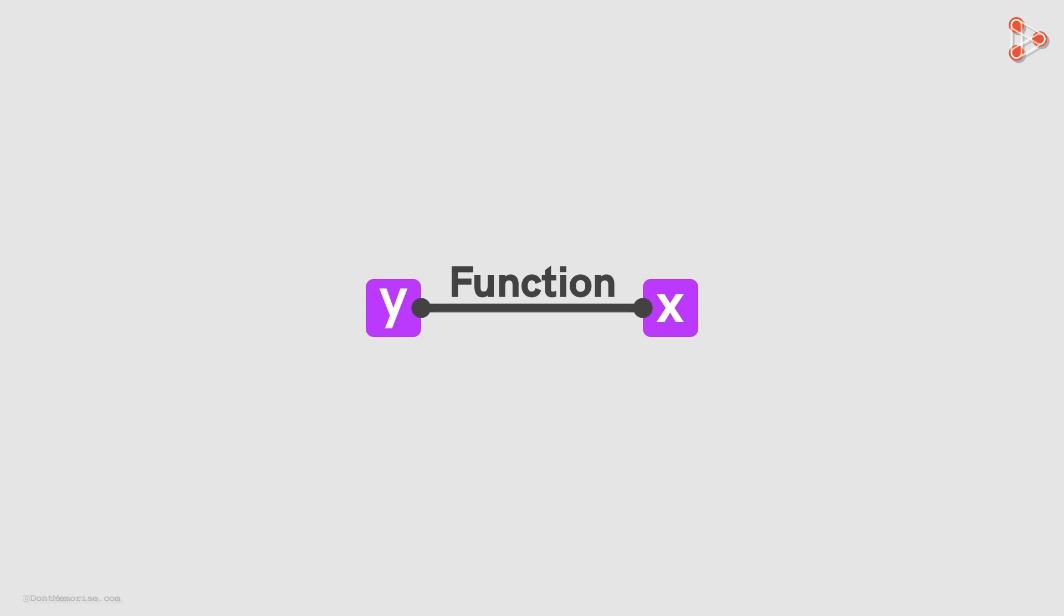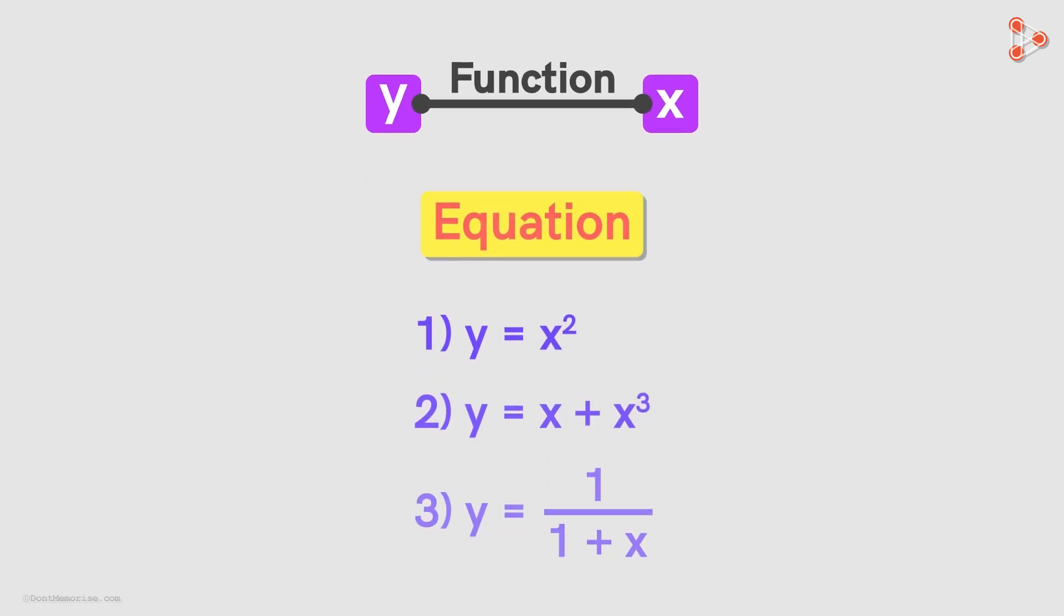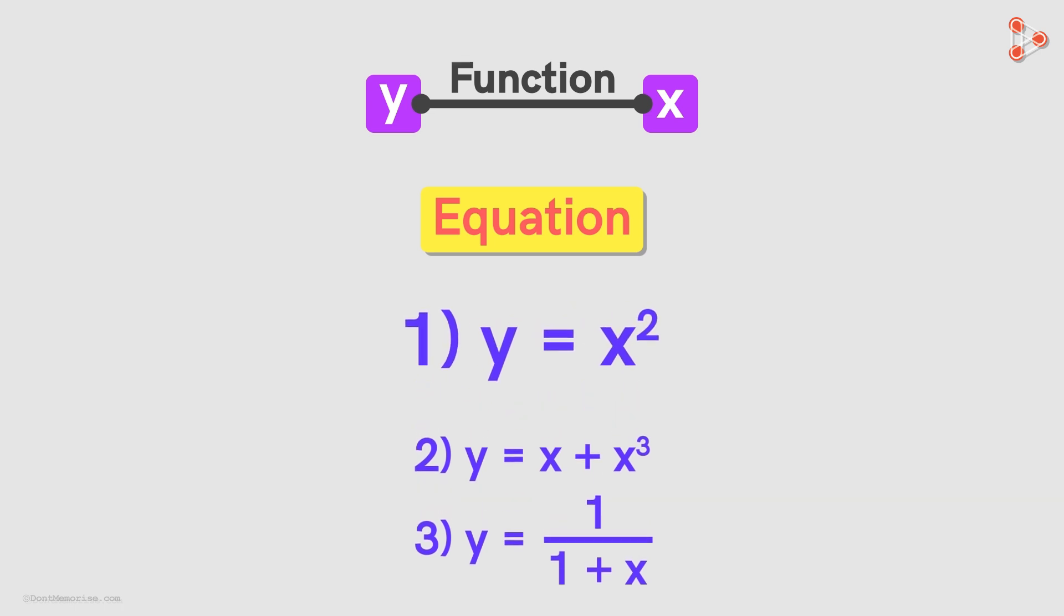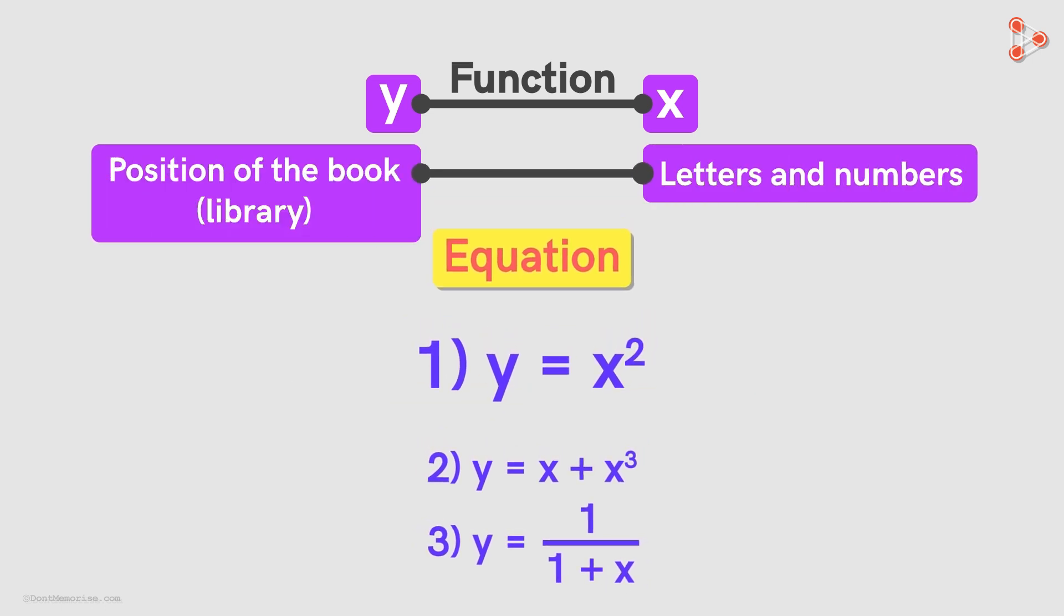But just knowing that two things depend on each other isn't very useful to us. We need to know how they are related to each other. Previously we saw that this relationship can be given by equations like these. This equation says that the value of the dependent variable is the square of the value of independent variable. But can a function like the position of a book in a library be represented like this? No, we cannot do that, right? We cannot represent this function by an equation like this.